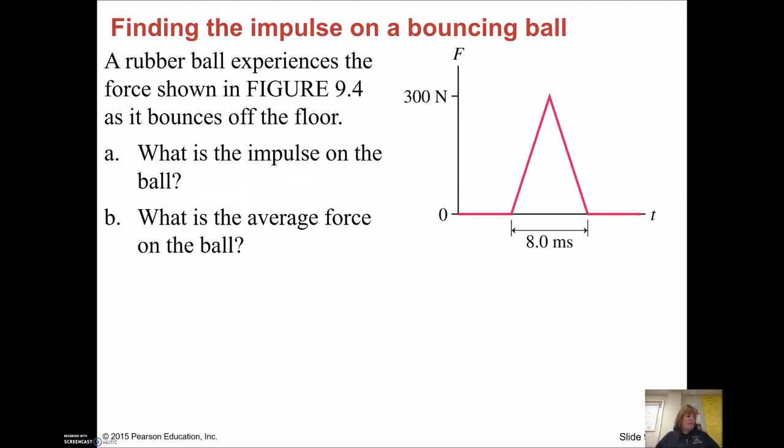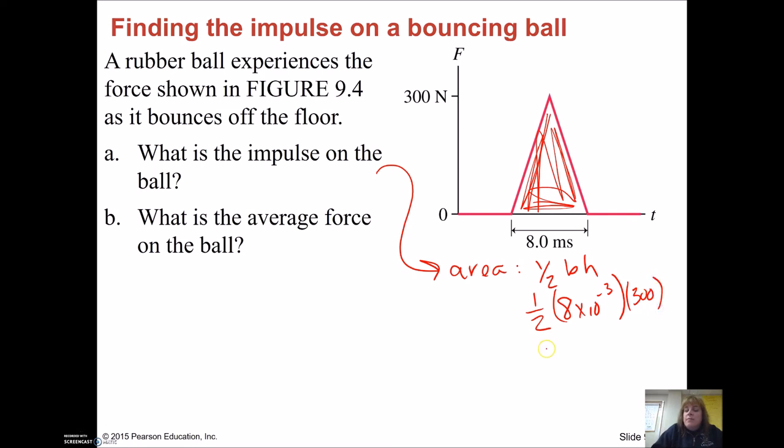Here I have a rubber ball that I dropped, and it experiences this force. The maximum force is 300 newtons over 8 milliseconds. What is the impulse of the ball? Well, the impulse of the ball is the average force times time, or it's the area under the graph. So my area under my graph here is a triangle. So that'd be one half base times height, or one half eight milliseconds, so that's times 10 to the negative third for milli, times 300 newtons. So if you plug that in your calculator, you will get 1.2 newton seconds.